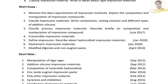Then we have to write regarding the composition and manipulation of impression compound. For the composition, we have to write about each ingredient and its function. Then the next subheading should be the manipulation of impression compound. We know that it can be available as sticks and cakes, so we have to explain each point in a detailed manner.